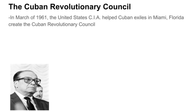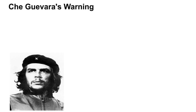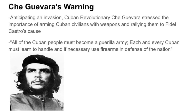In March of 1961, the CIA helped Cuban exiles in Miami create the Cuban Revolutionary Council, chaired by former Cuba Prime Minister José Miró Cardona. Cardona was supposed to lead Cuba after the exiles, with CIA help, overthrew Castro's government. Anticipating an invasion, Che Guevara stressed the importance of arming Cuban civilians, stating: 'All of the Cuban people must become a guerrilla army. Each and every Cuban must learn to handle, and if necessary use, firearms in defense of the nation.'